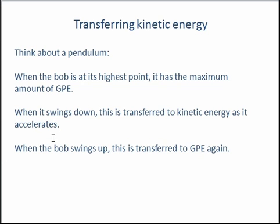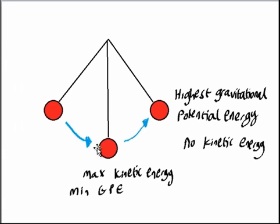Then, when the bob swings back up, it is transferred into gravitational potential energy again, because it's going further away from the surface of the Earth and the height is increasing, which increases the gravitational potential energy.